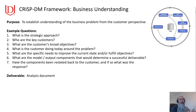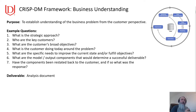Let's talk about business understanding. The purpose is to establish understanding of the business problem from the customer perspective. Some example questions to ask: What's the strategic approach? Who are the key customers? What are the customers' broad objectives? What is the customer doing around the problem today? What specific needs are required to improve the current state to fulfill objectives? What model outputs or components would you use to determine a successful deliverable? And what components have been restated back to the customer, and if so, what was the response? The expected output for the course is an analysis document, which you'll continue to build on in future weeks — either as three separate documents or a single document you add to week over week. The preferred approach is to add to it week over week.